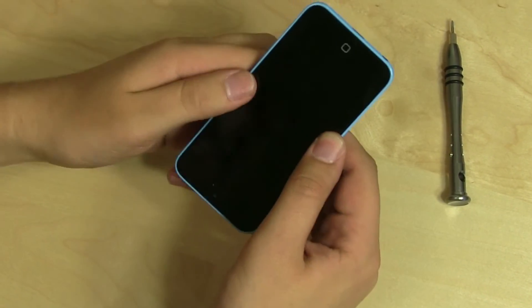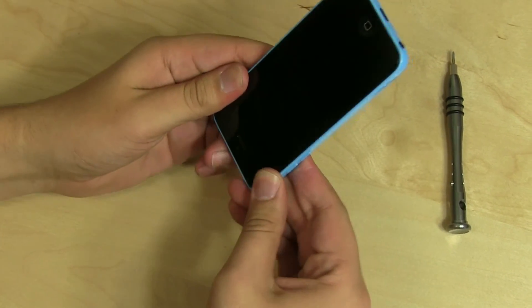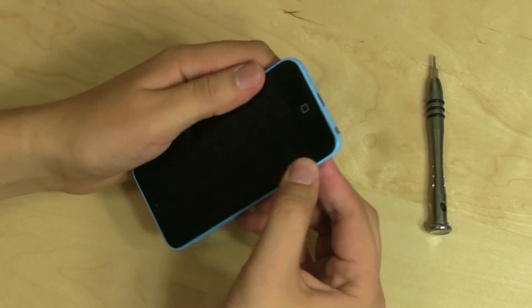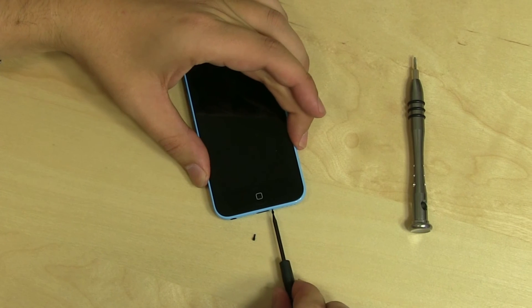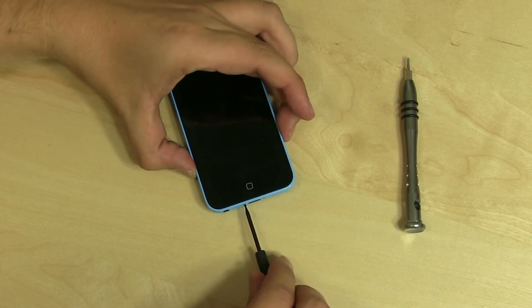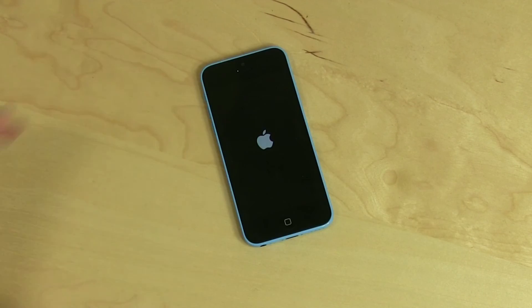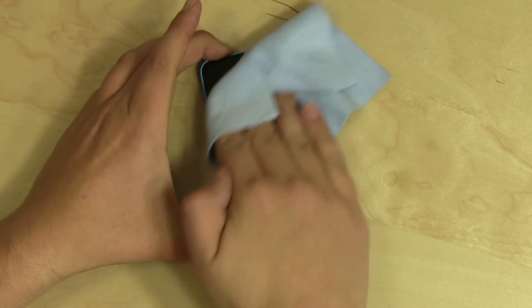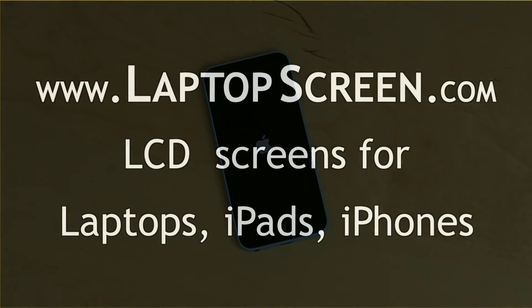Snap the display assembly into the case by gently squeezing around the perimeter until it clicks in place. Replace two pentalobe screws at the lightning port. Replace the SIM card and tray. Remove any protective film if present. And you're done.